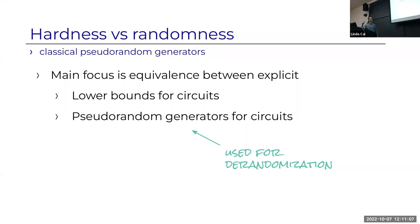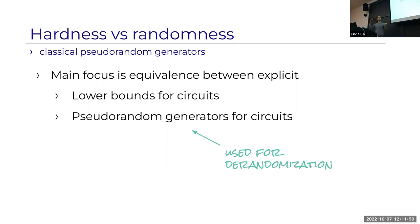It's worth pausing to note something weird: why do we need a PRG for circuits if we just want to derandomize BPP? When we want to derandomize algorithms, we're simulating a probabilistic algorithm on a given input. That input could provide auxiliary advice to the algorithm, which helps it break the PRG. So the actual distinguisher—the adversary—is not just a uniform algorithm; it's an algorithm coupled with advice, which gives a circuit.